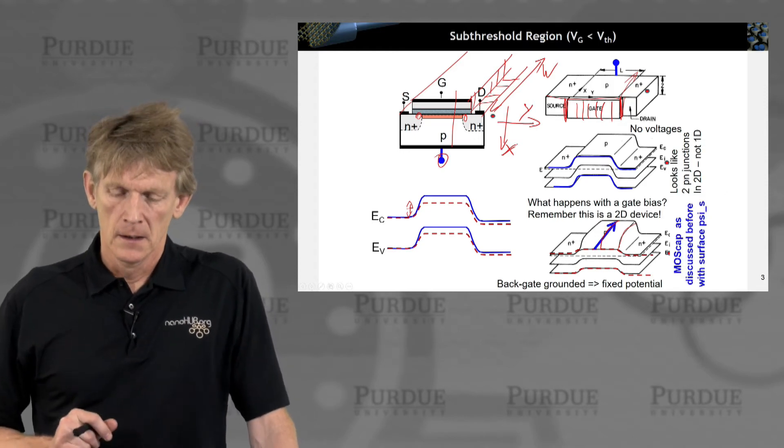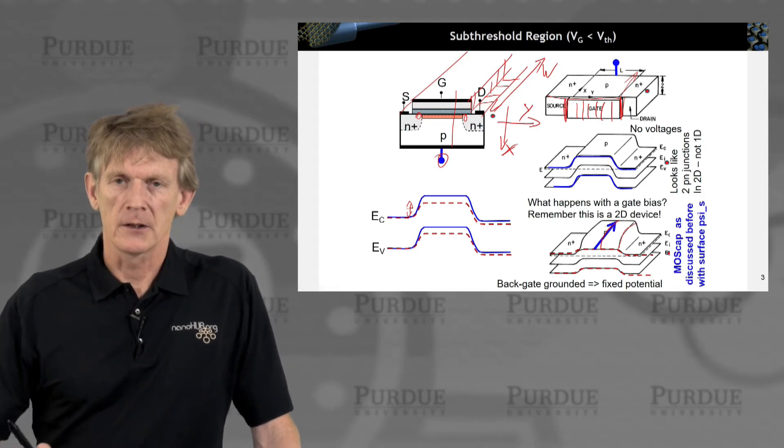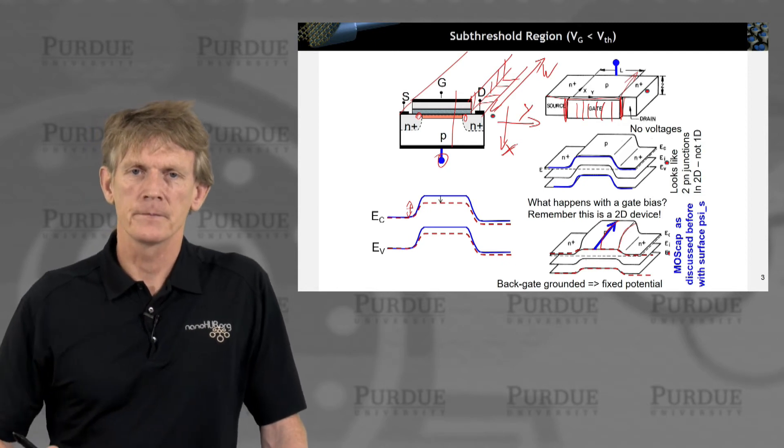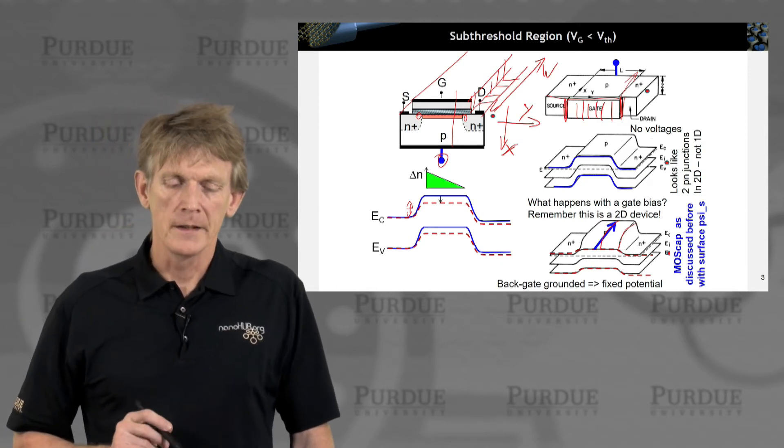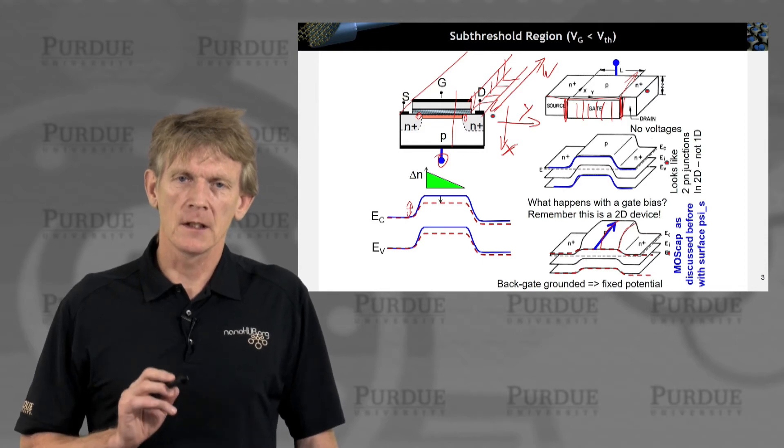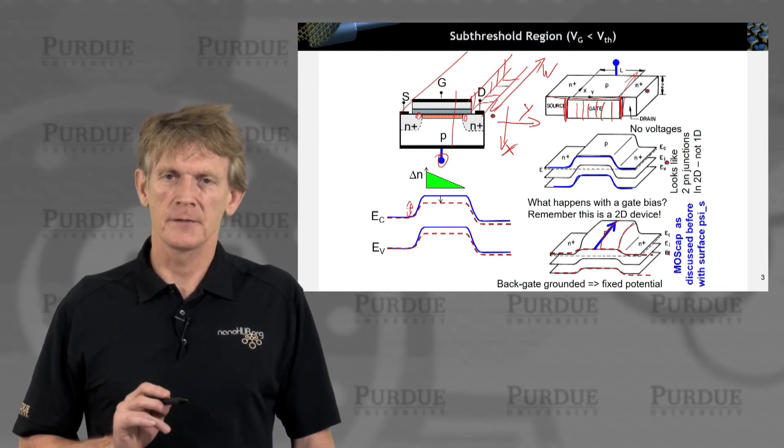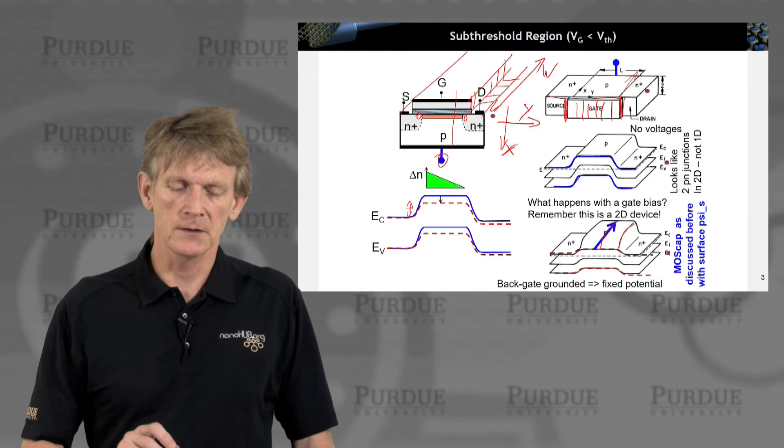The background gate here is typically held at a fixed potential. Again, here this is how we calculated the MOS capacitor.